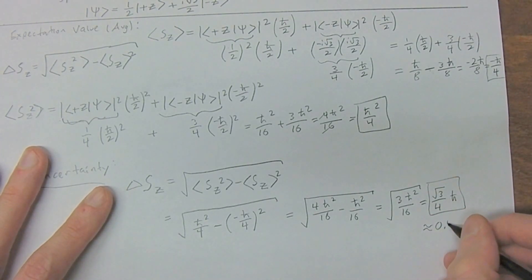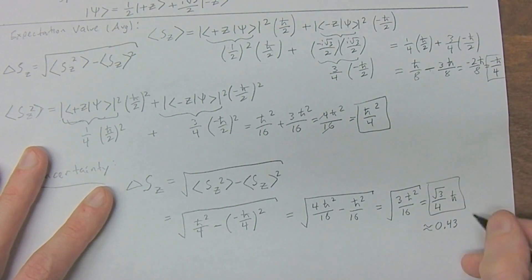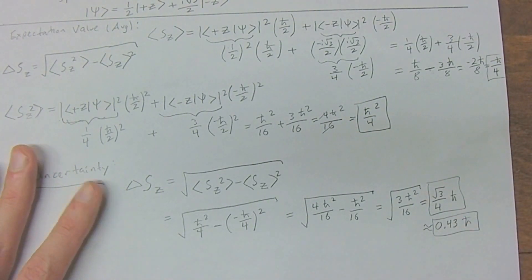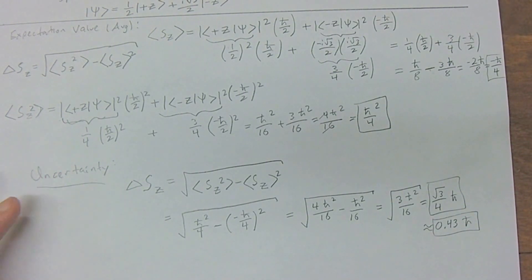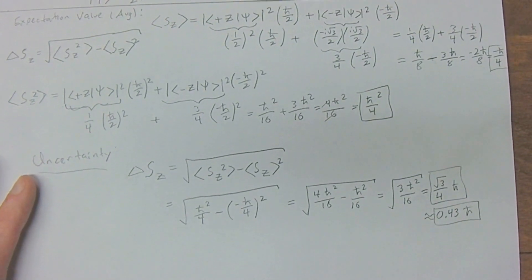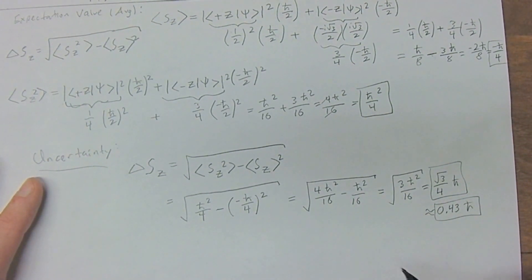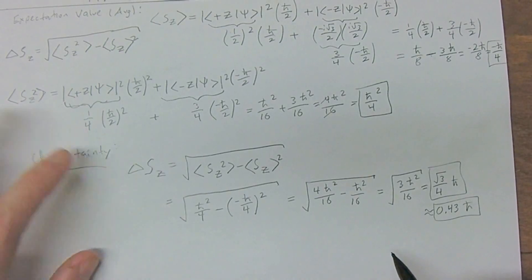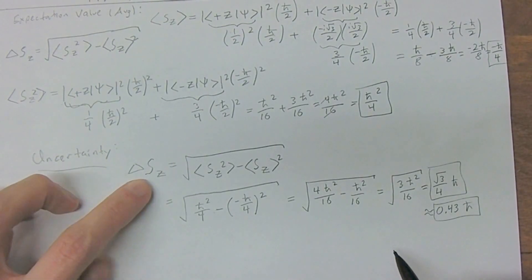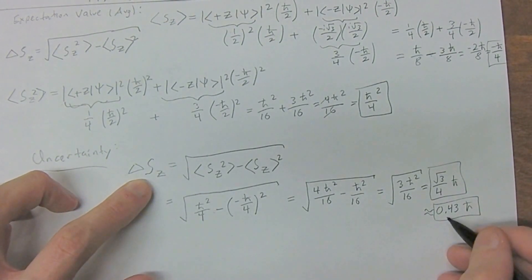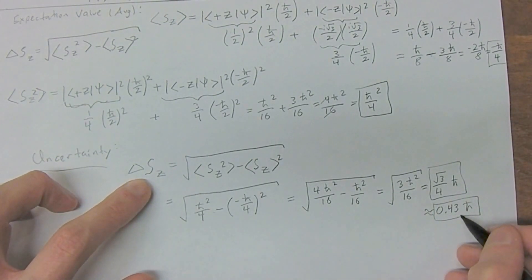So the uncertainty in delta S_z is approximately 0.43 h-bar. This means our measurement uncertainty in the z-component of spin is 0.43 h-bar.